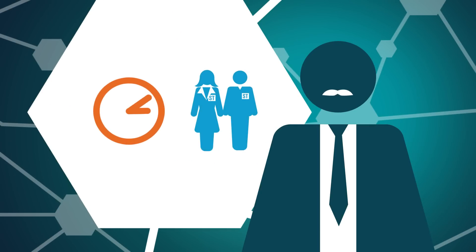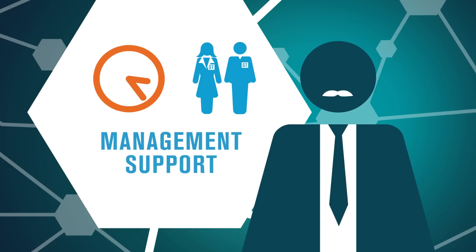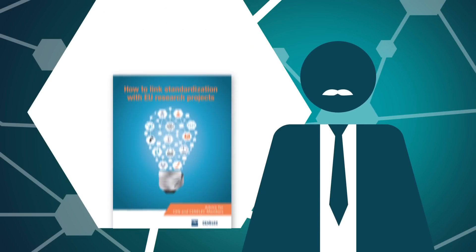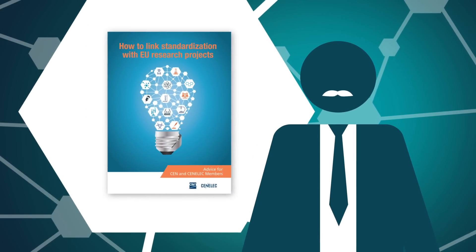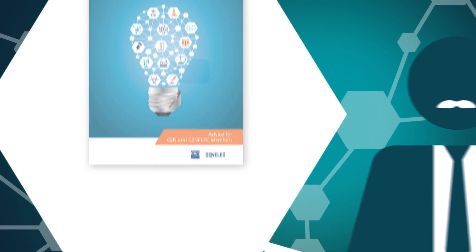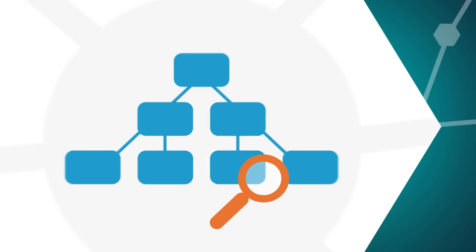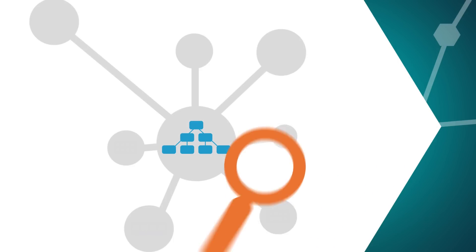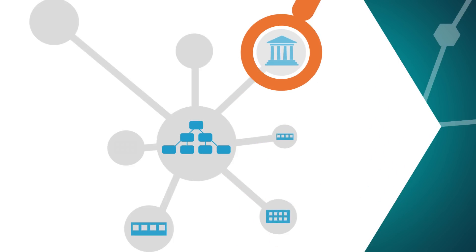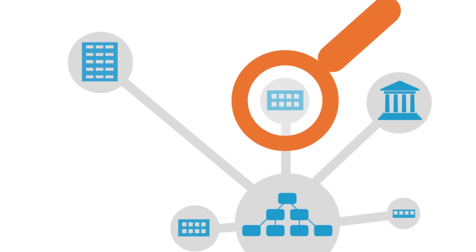You'll need time and resources, so the first thing on your agenda should be getting the support of your management. This video series and the advice document should provide plenty of arguments and potential benefits. Then the important step is doing an analysis of your organization, but also of your environment. This way you'll gather the information you need to decide on your standards body's involvement in research and innovation.